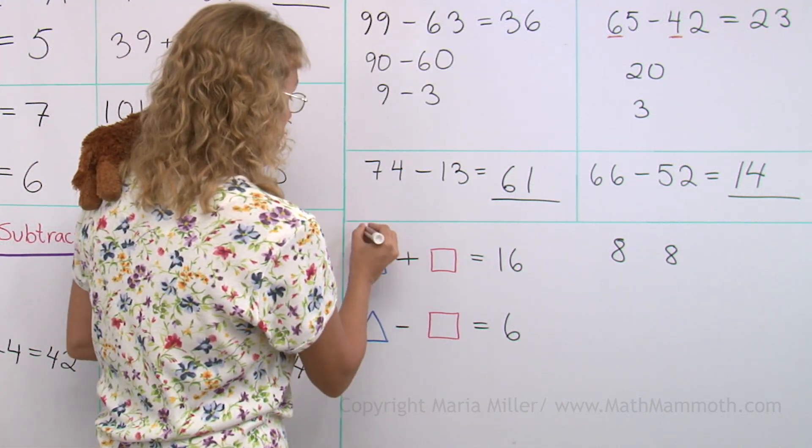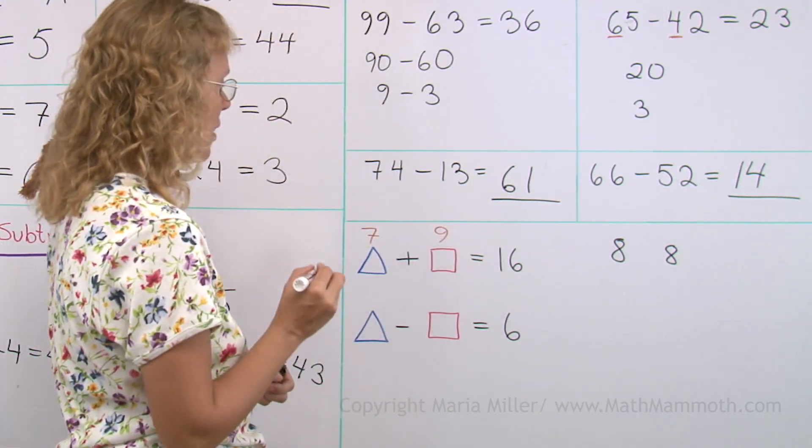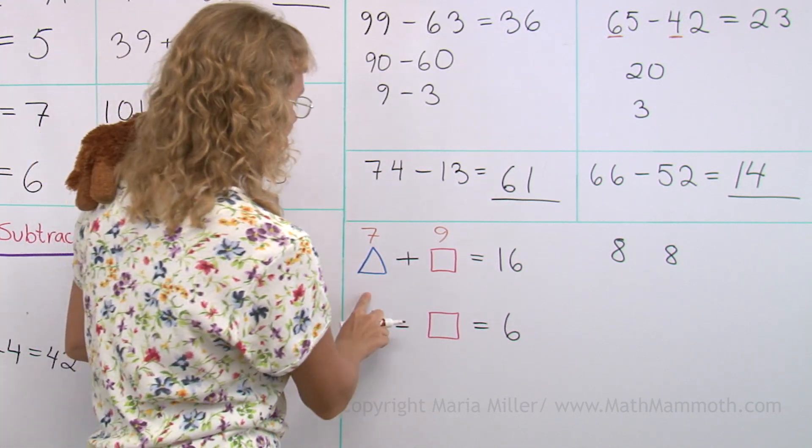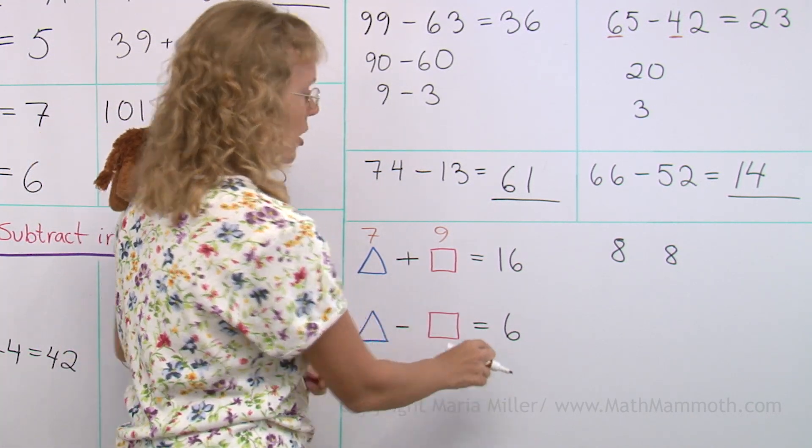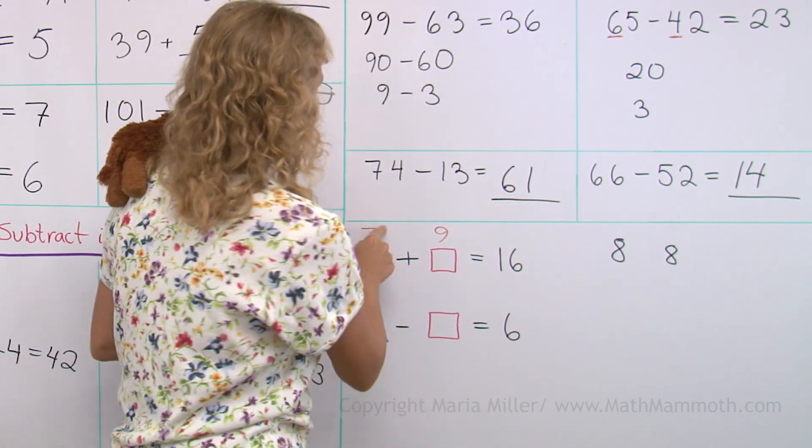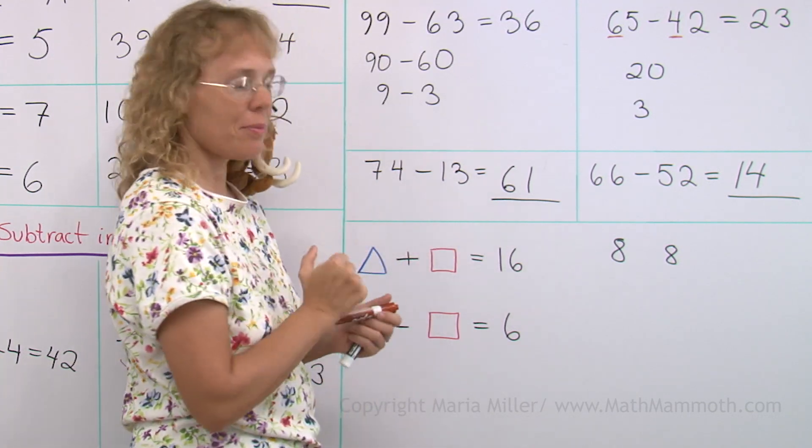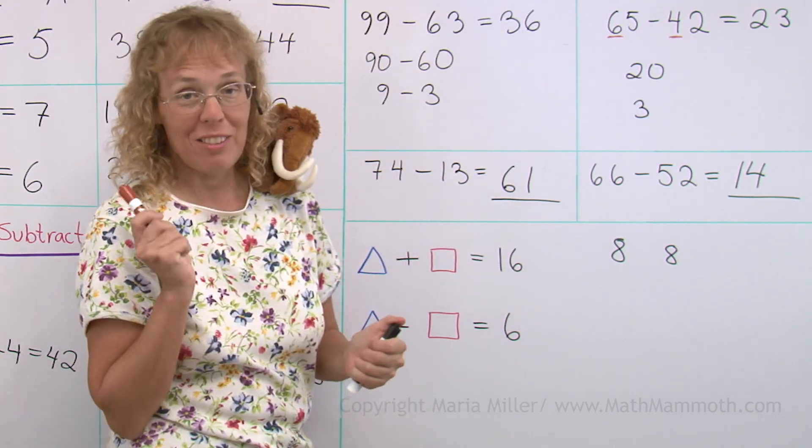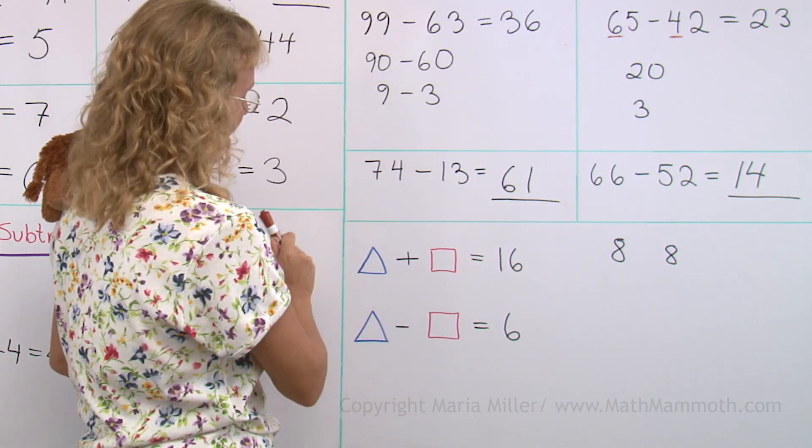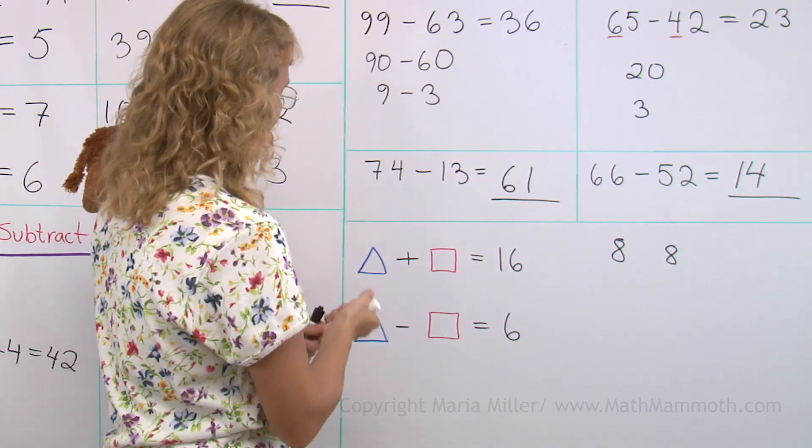Well, how about 7 and 9? 7 plus 9 makes 16. But 7 minus 9 is not 6. So that does not work either. And 9 minus 7 would be 2. That wouldn't work either. What else could we try?